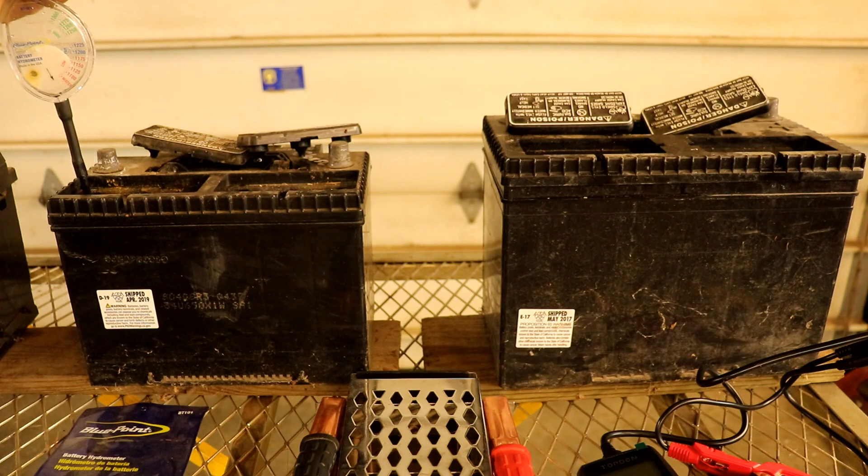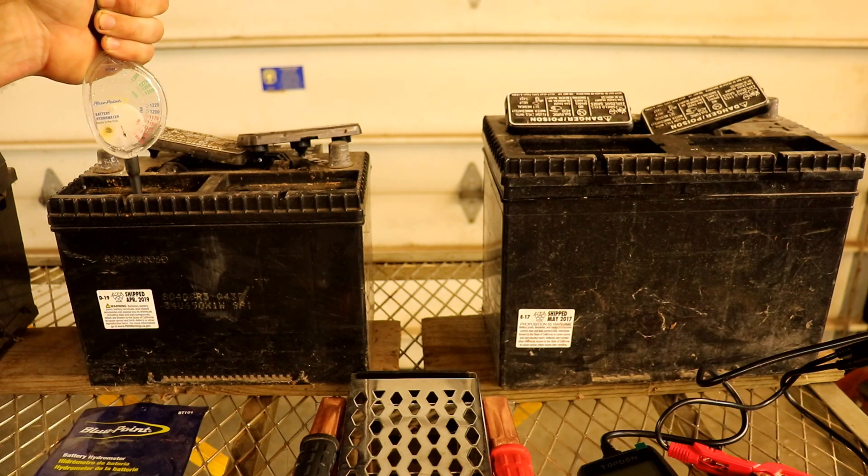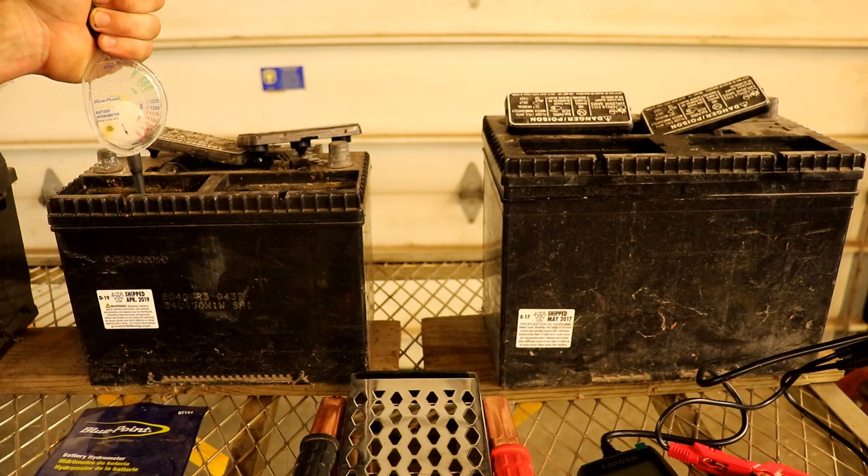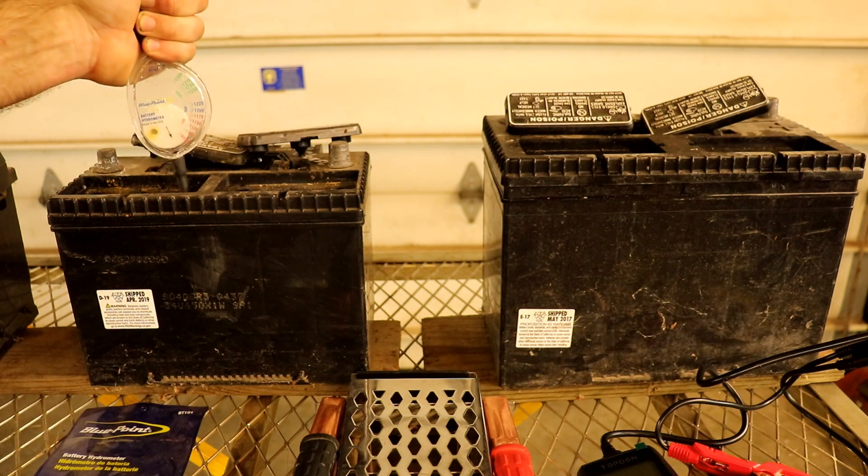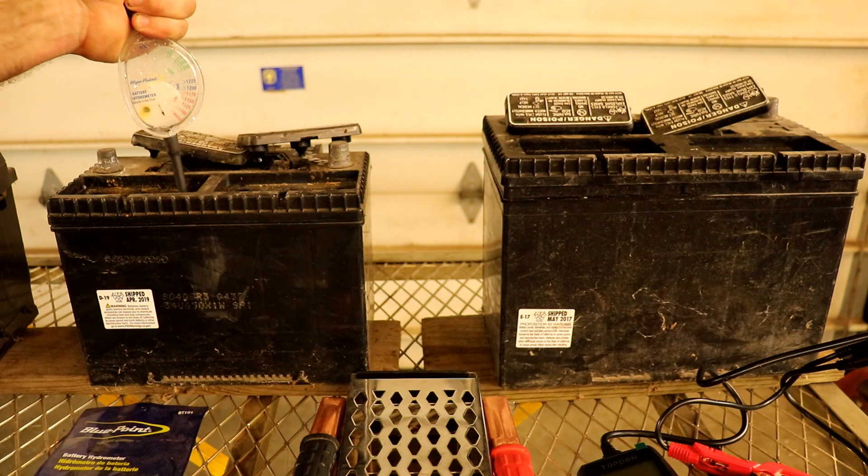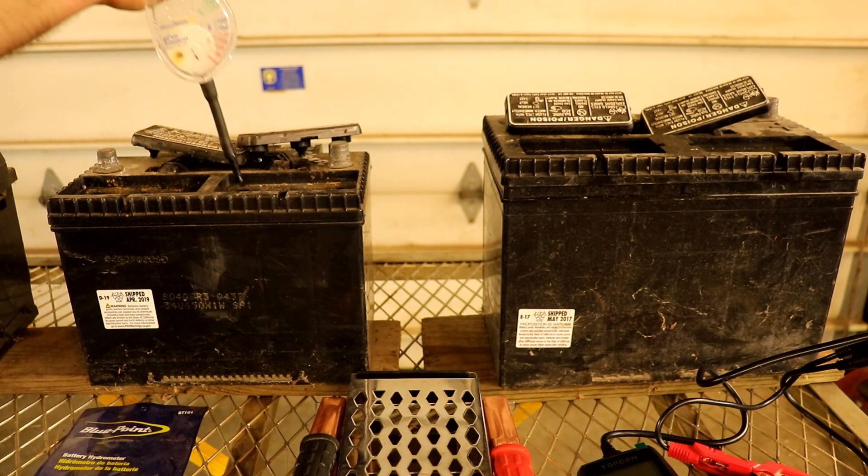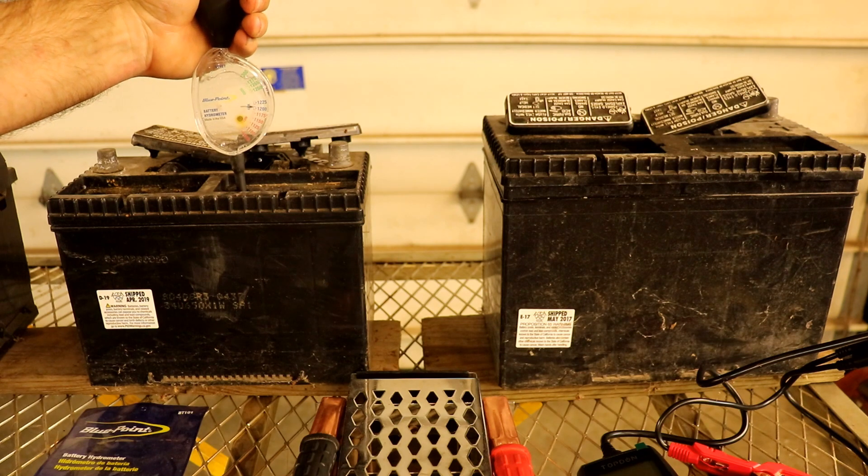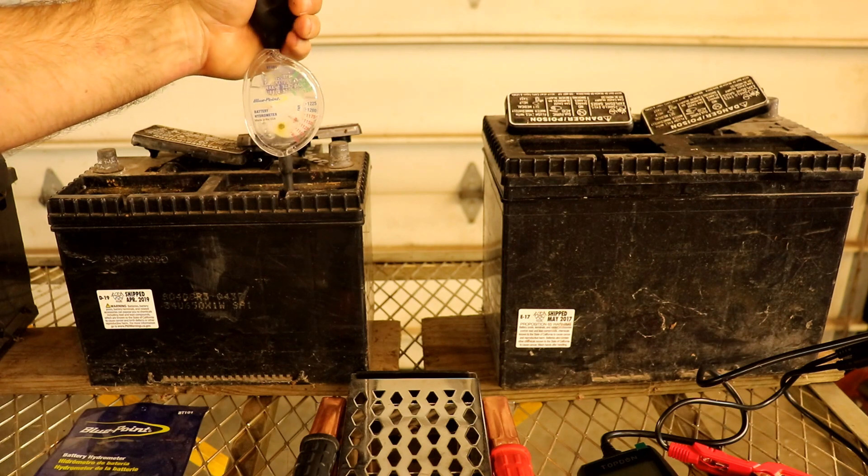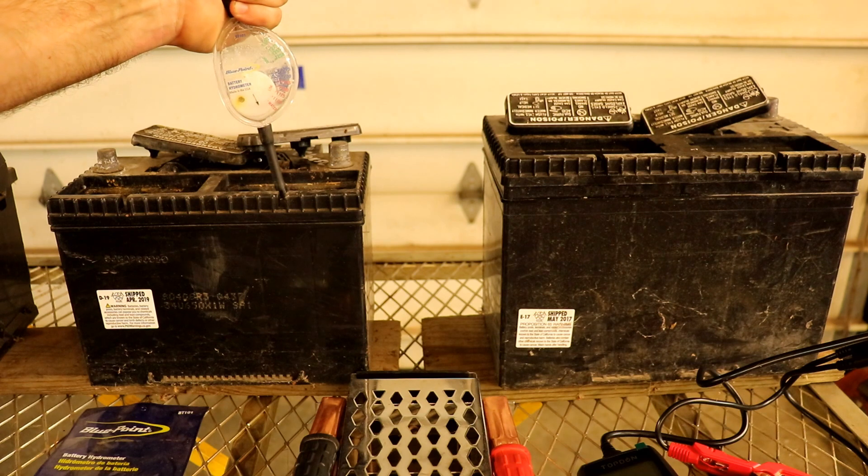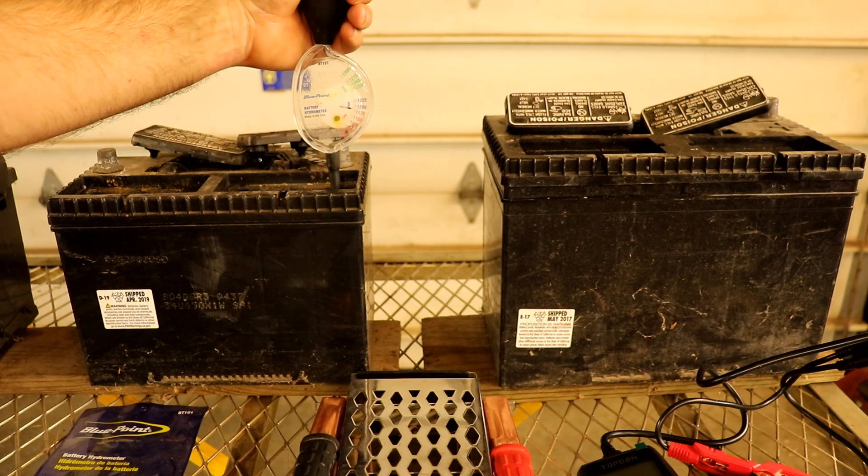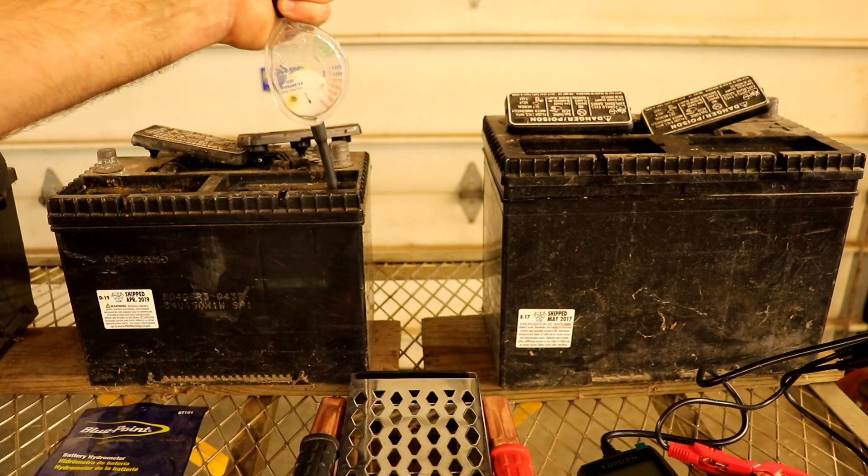Testing the first battery with the hydrometer shows readings around 1200 to 1225 for each cell. So this battery looks pretty good.